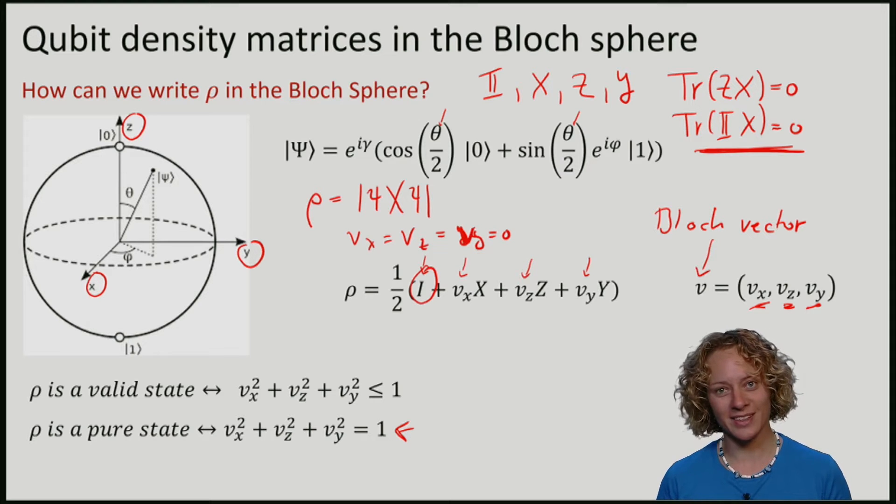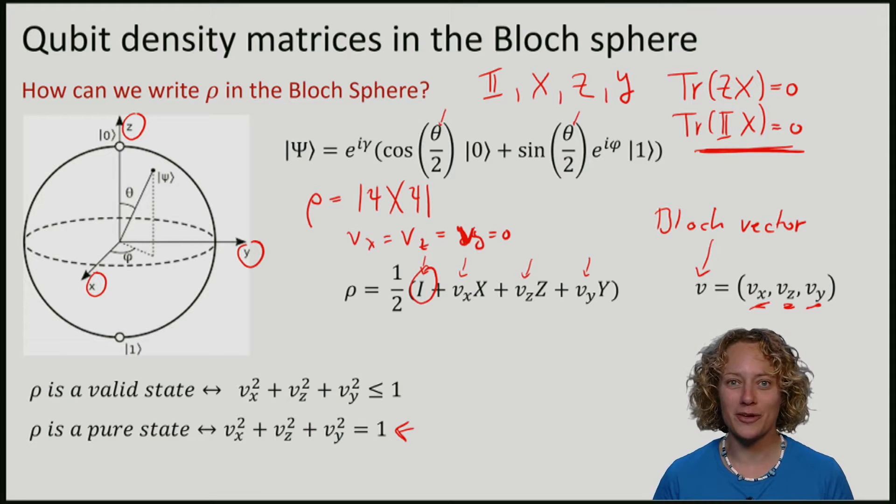In particular, the maximally mixed state is at the origin of the Bloch sphere.